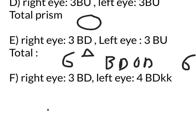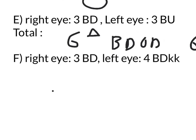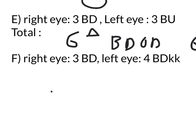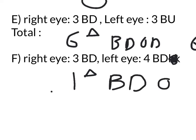Let's go to F, the last example. In the right eye we have 3 base down, and in the left eye this is 4 base down. Ignore the 'k and k' — that's a mistake. So right eye, you have 3 base down, and left eye, you have 4 base down. Here, you subtract them, and you get 1 prism diopter base down in the left eye.